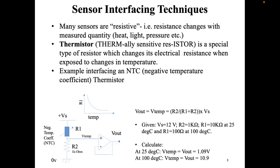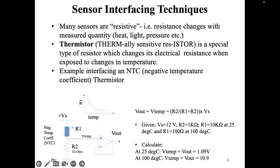Consider this example: a constant supply of 12 V, R2 fixed at 1 kΩ, and R1 — the thermistor — has 10 kΩ at 25°C and 100 Ω at 100°C. You can calculate the output voltage per temperature change. At 25°C the output voltage is approximately 1.09 V, while at 100°C it increases to 10.9 V.